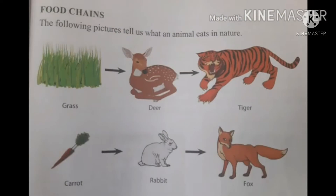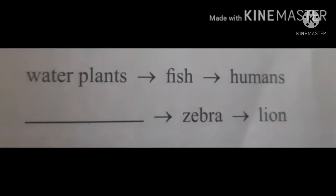Next is food chains. The following pictures tell us what an animal eats in nature. In the first picture, you can see grass is eaten by deer and deer is eaten by a tiger. In the second picture, carrot is eaten by rabbit and rabbit is eaten by a fox. The grass, deer, and tiger form a chain. Such a chain which tells us who eats what in nature is called a food chain. We already learned that plants can produce their own food, so all animals depend on plants for their food. All food chains will start from a plant or plant product.